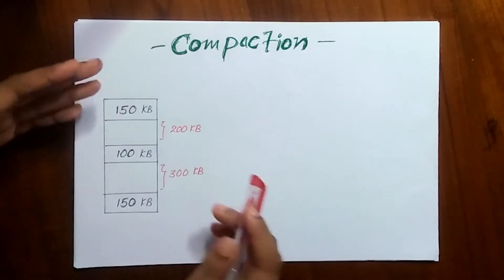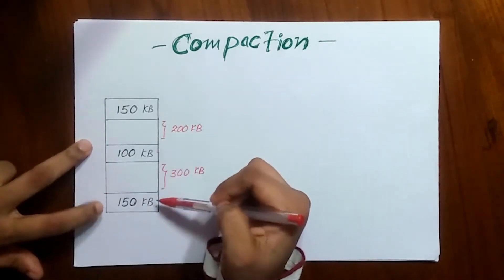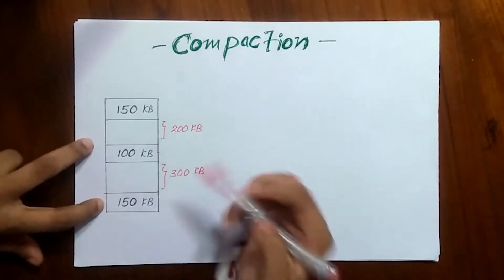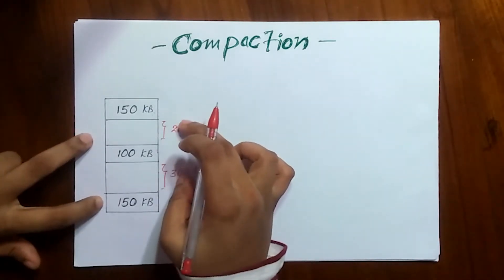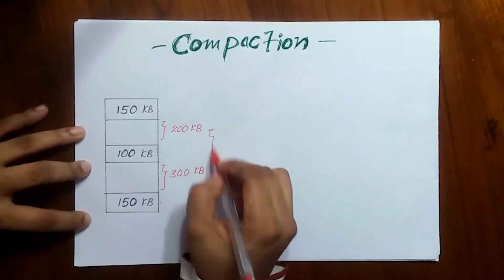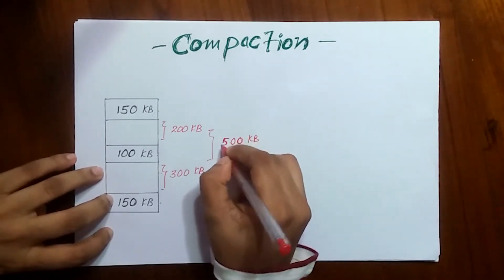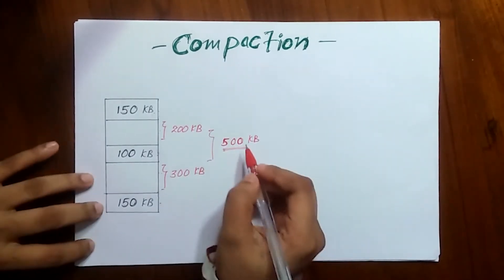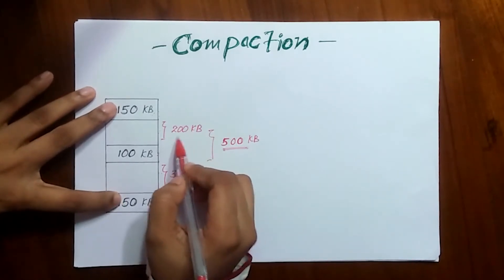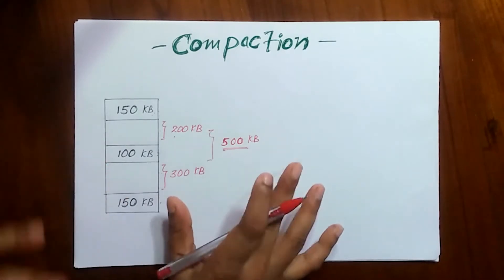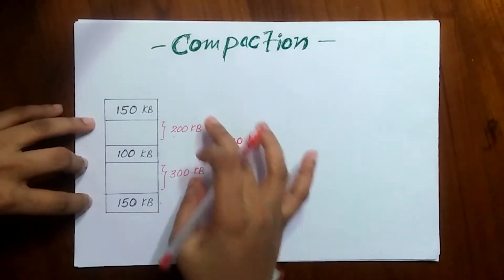Here you can see all together there are five partitions. From those five, three partitions already have processes in them, and two partitions are empty. All together we have 500 KB of empty space, but this 500 KB is divided — one part is 200 KB and the other partition is 300 KB. This is called external fragmentation.